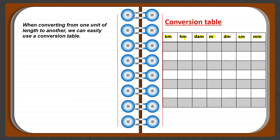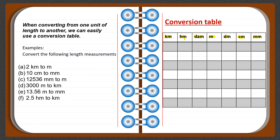For example, we have two kilometers to be converted to meters. We first locate where kilometer is in the conversion table. After locating the given unit, we fill in the digits according to the position of the given unit. The given unit is kilometer, and the given number is two, so we put a two under the kilometer column.